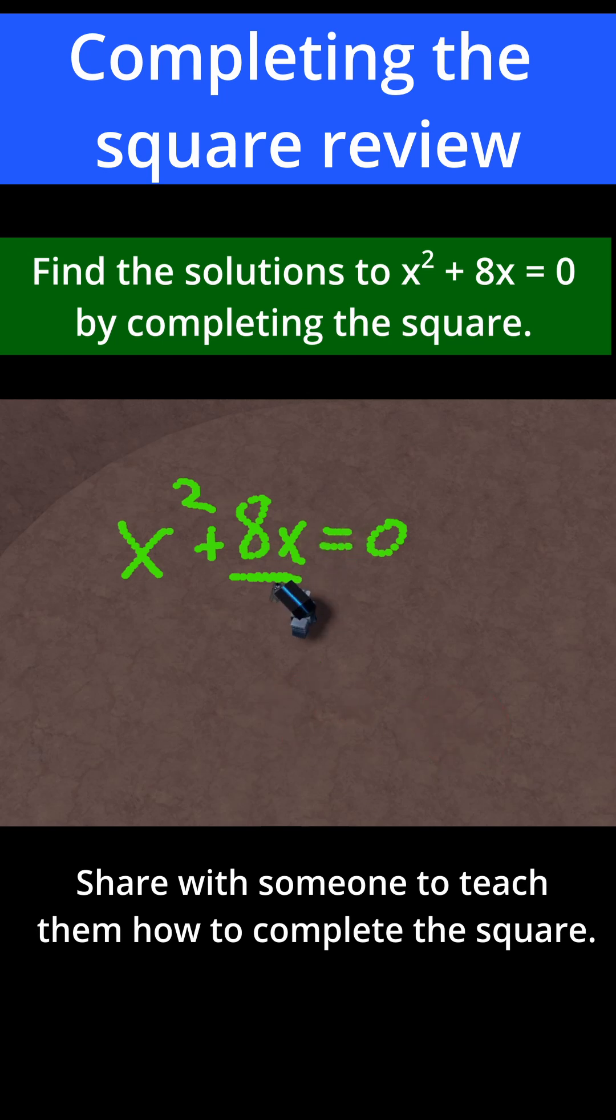So all you need to do is add this number to both sides. So I'll have x squared plus 8x plus 16 is equal to 16. You have to add 16 to the right-hand side as well, because whatever I do to the left-hand side of an equation, I have to do it to the right-hand side to make sure it's still fundamentally the same equation, or else I'm going to get a different answer.